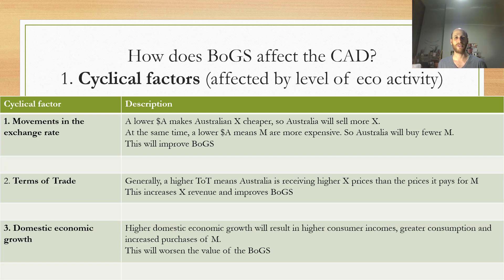The third cyclical factor is domestic economic growth. If the Australian economy starts growing, people have more money and want to consume, so they will buy more imports. A greater volume of imports relative to exports is going to worsen BOGS and also worsen or increase the current account deficit.